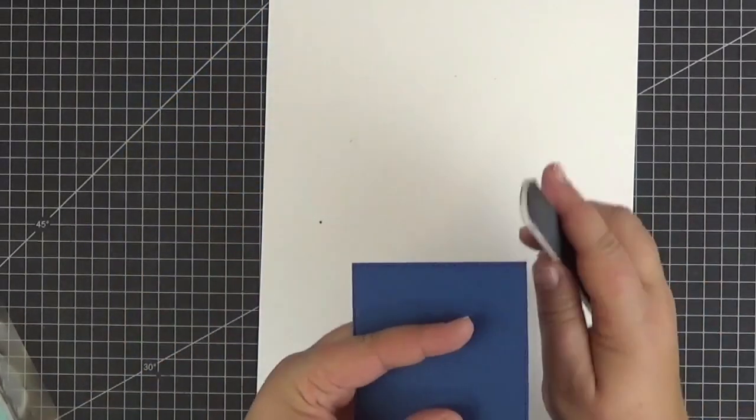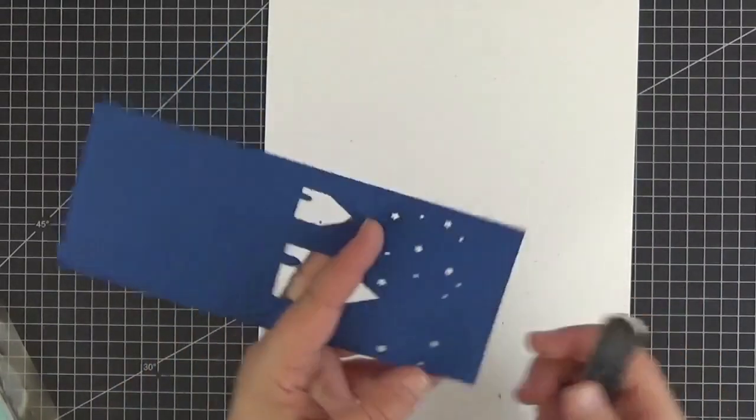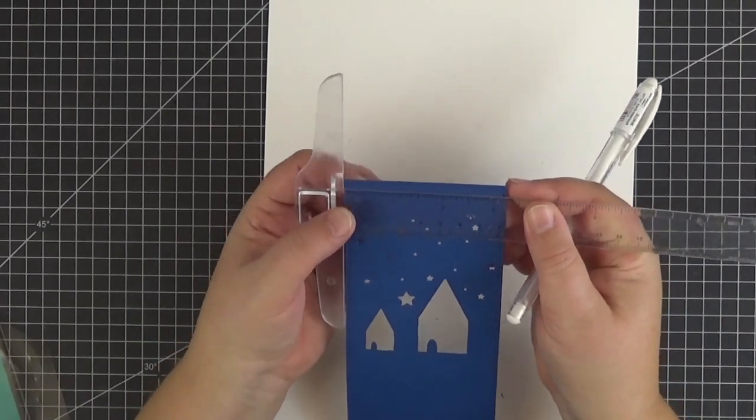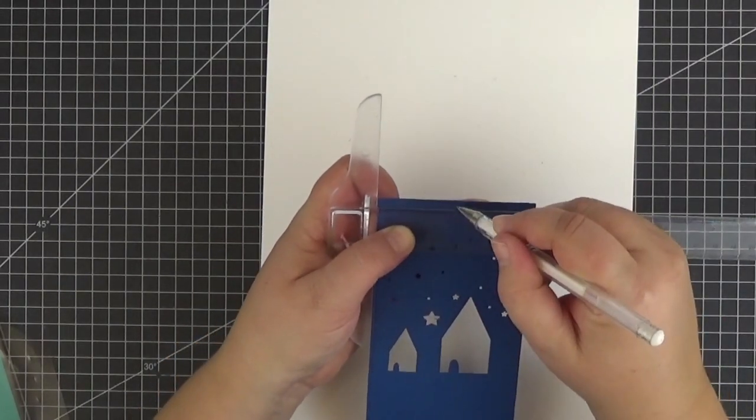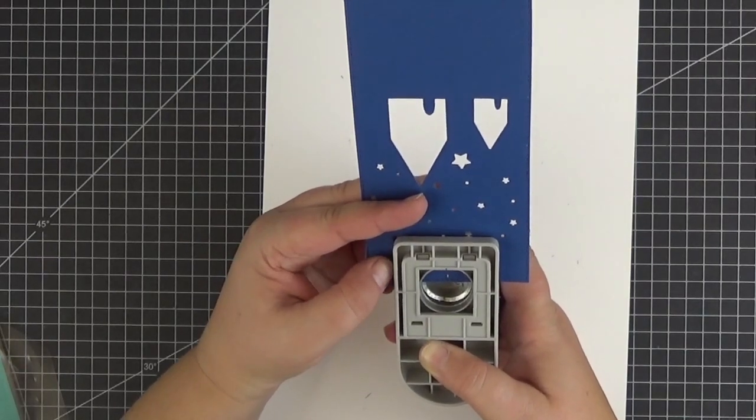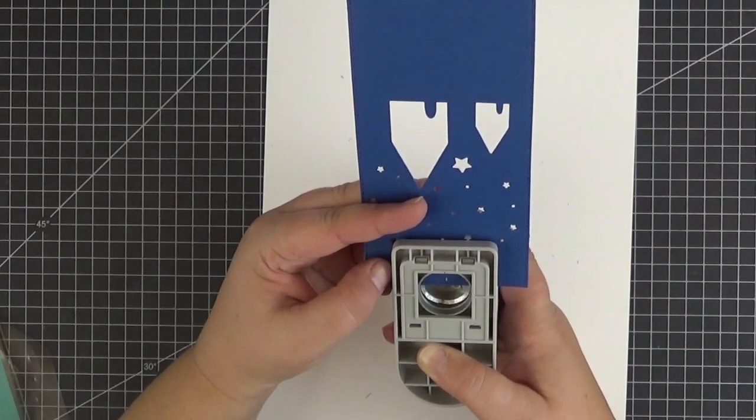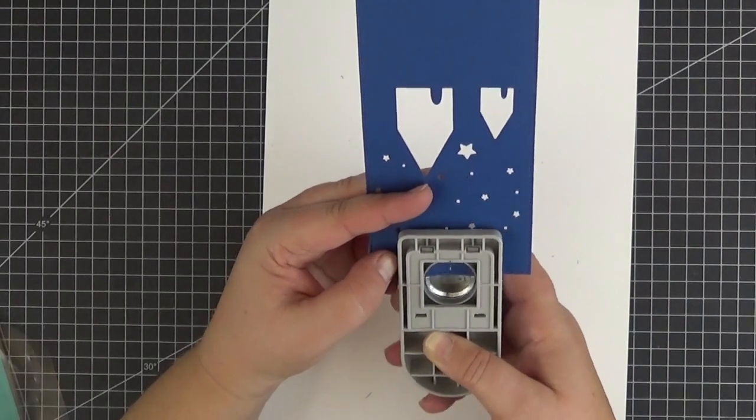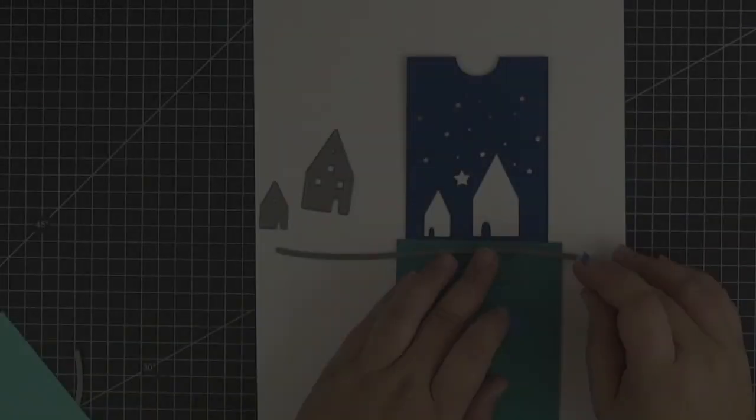Now let's grab a T-ruler and draw a line in the center of the upper edge. My panel is three and a quarter inches wide, so the center is at one and five-eighths. You could run your panel through the die cutting machine once more with a one inch circle die, but it's just faster for me to use a hole punch.